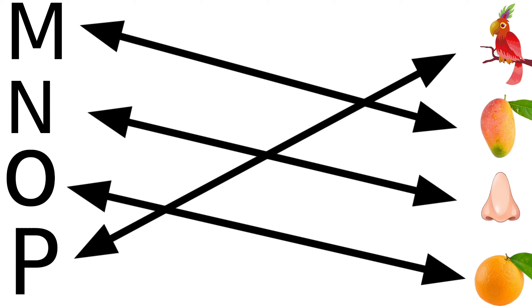S for sun, T for tiger, U for umbrella, V for van, W for wall, X for x-ray.